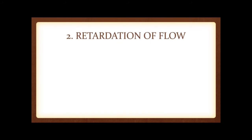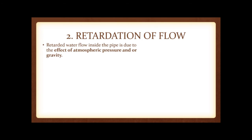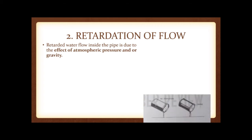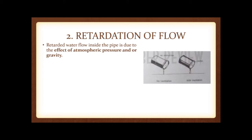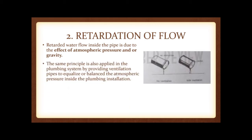The second problem encountered in the sanitary drainage system is retardation of flow. Retarded water flow inside a pipe is due to the effects of atmospheric pressure and gravity. An example is pouring liquid from a can with only one hole punched — the liquid hardly flows. When another hole is made on the other side, the container is ventilated and the liquid flows smoothly. The same principle applies in plumbing: ventilation pipes are provided to equalize or balance the atmospheric pressure inside the plumbing installation.